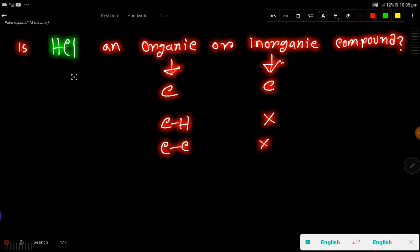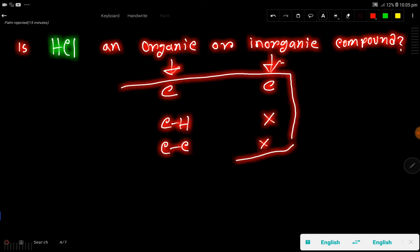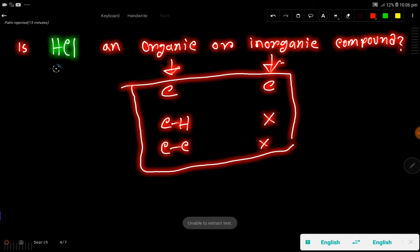So depending on these criteria, we can say that HCl is an inorganic compound because it doesn't have any carbon, carbon-hydrogen bond, or carbon-carbon bond. So this is an inorganic compound or inorganic acid. Thank you for watching this video.